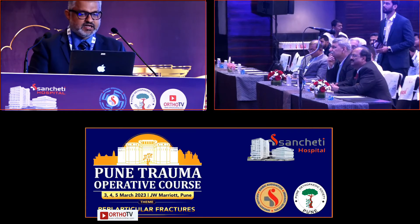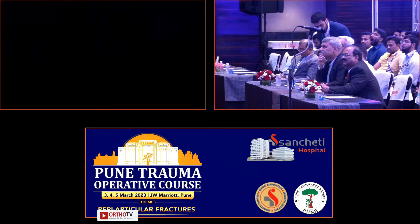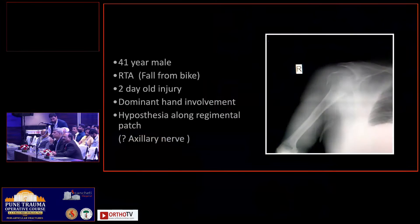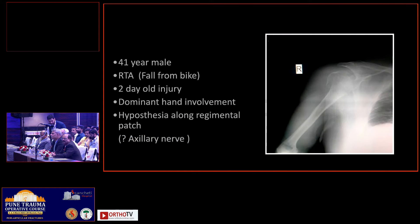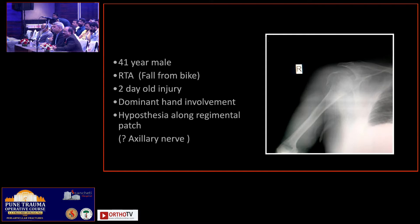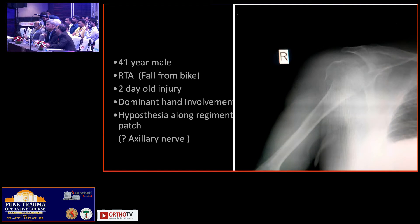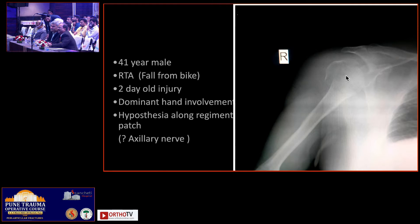We'll talk about this case. A 41-year-old male, victim of a road traffic accident, two-day-old injury, comes with dominant hand involvement. This patient did have an axillary nerve involvement. On plain x-rays, you can see a double contour being seen here, and this is something you need to look at carefully on your plain x-rays.